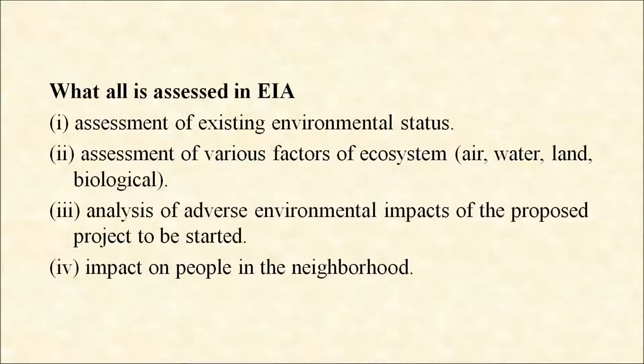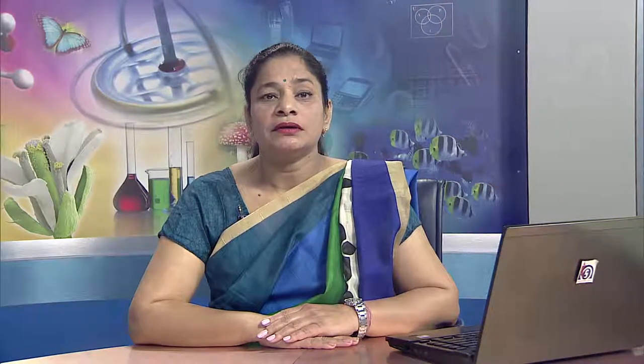What is assessed in EIA? Assessment of existing environmental status, assessment of various factors of the ecosystem, analysis of adverse environmental impact of the proposed project to be started, and impact on people in the neighborhood. EIA process looks at various components of the environment such as air, water, land, biological and so on, as shown in the figure.